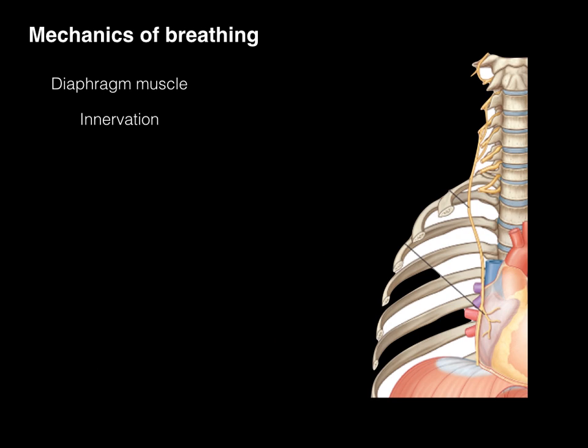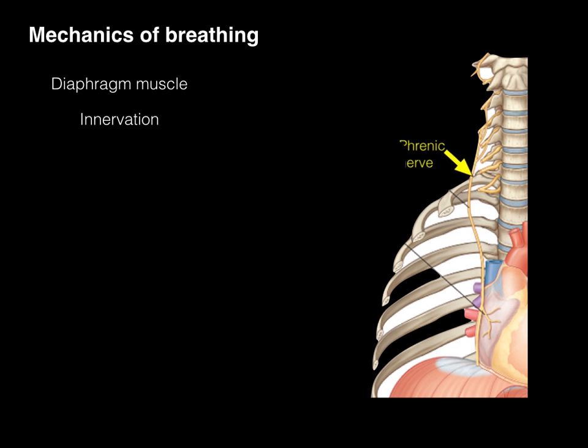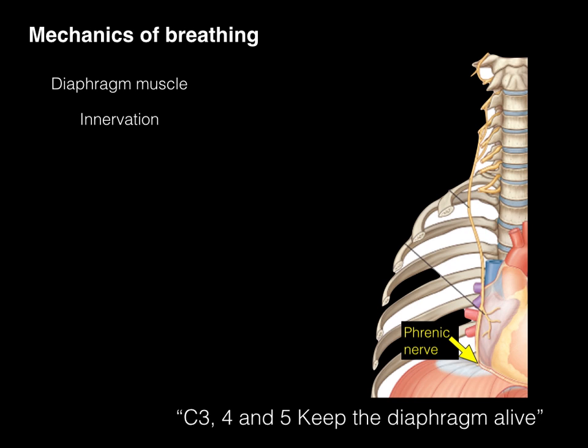The diaphragm is innervated by a somatic nerve called the phrenic nerve. It arises from the C3, C4, and C5 spinal nerve levels, courses down, and in addition to taking sensory innervation from the parietal pleura — mediastinal and diaphragmatic parietal pleura — it provides motor innervation to the diaphragm. Because it comes from C3, C4, and C5, remember: C3, C4, and C5 keep the diaphragm alive.